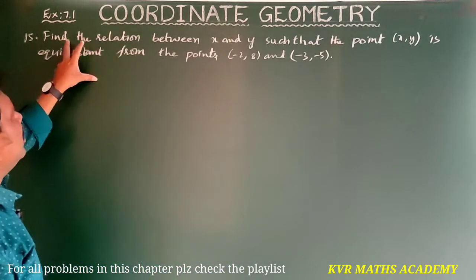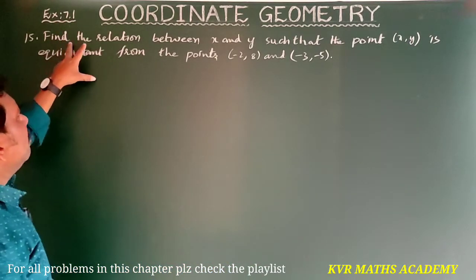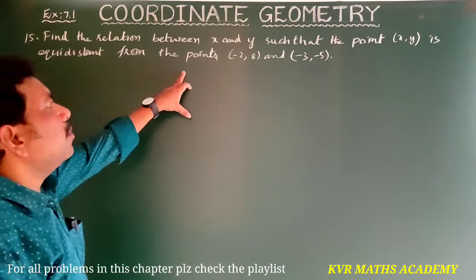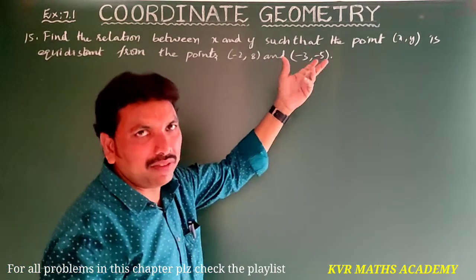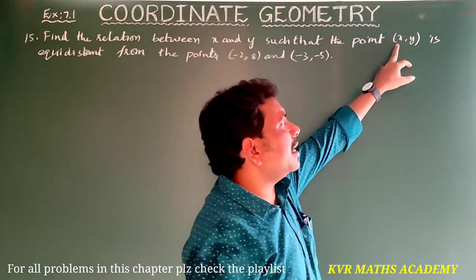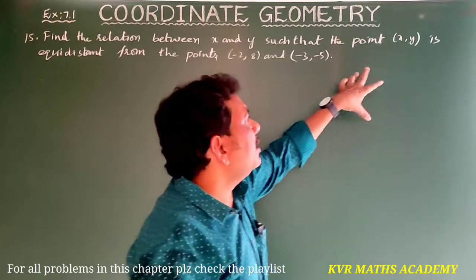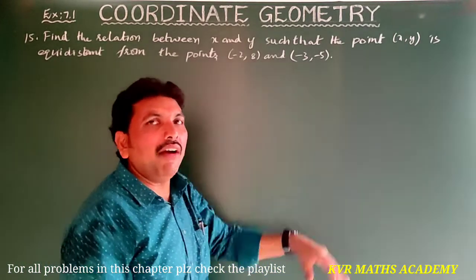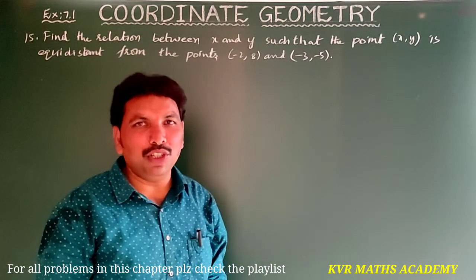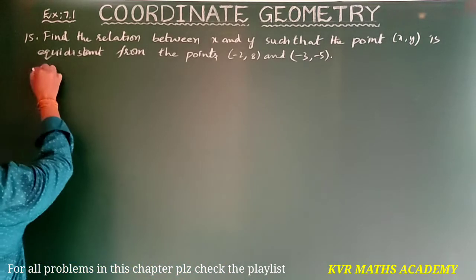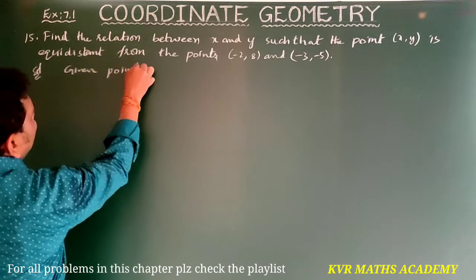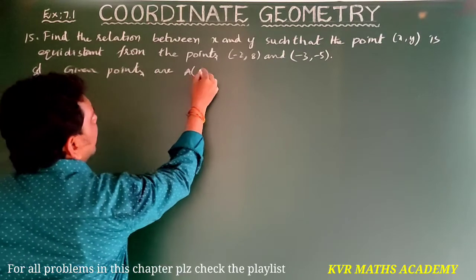Next, the 15th question — the final question in exercise 7.1: find the relation between x and y such that the point (x, y) is equidistant from the points (-2, 8) and (-3, -5). Two points are given and P(x, y) is the point equidistant from them. We need to find the relation between x and y, meaning we should find the equation.